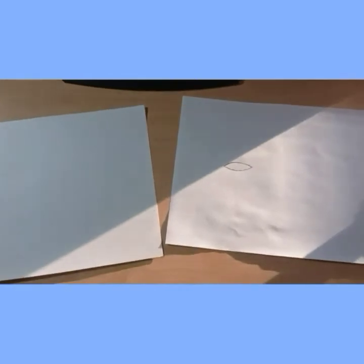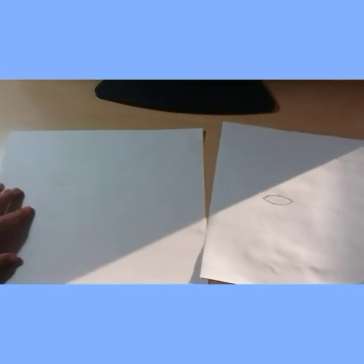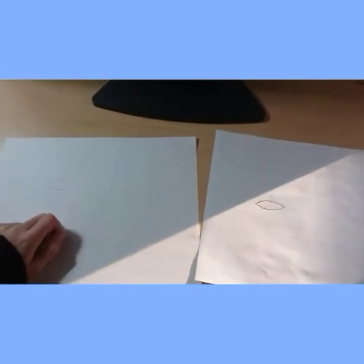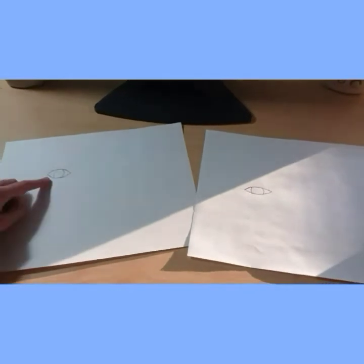So here are the results so far. Now what you're going to want to do is you're going to draw the iris which has the pupil in it. So let's draw that.